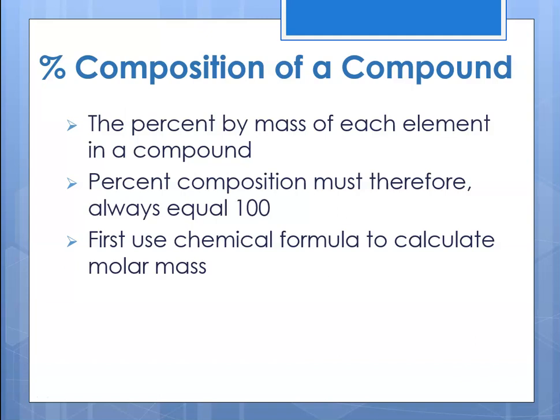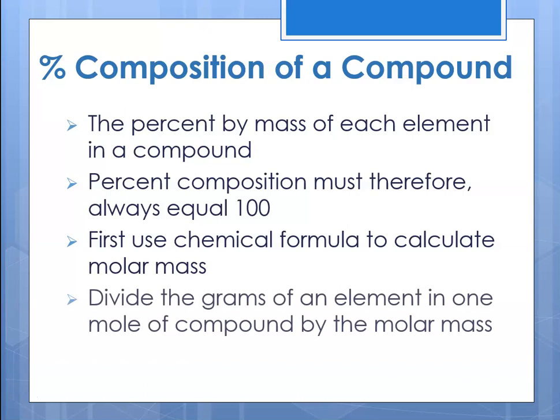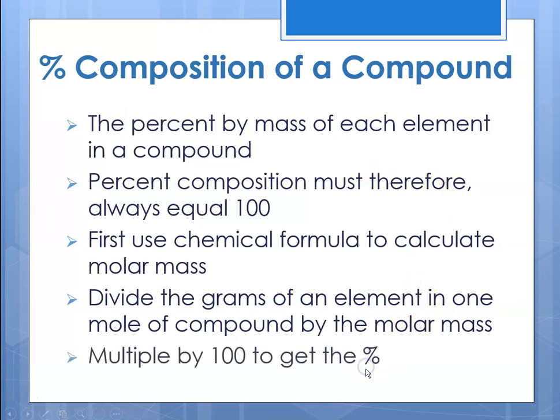The first thing we do is use the chemical formula of the substance to calculate its molar mass. Then for each element, we divide the number of grams of that element by the molar mass of the compound. We're looking at each element's contribution to the total molar mass, then multiply by 100 to get the actual percent.